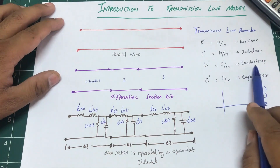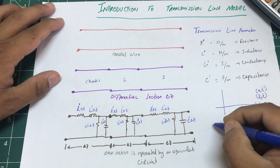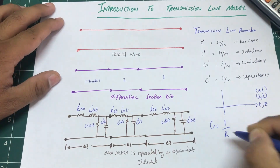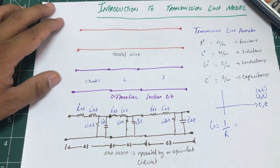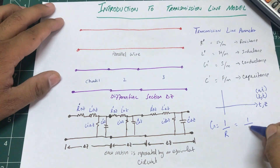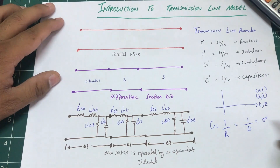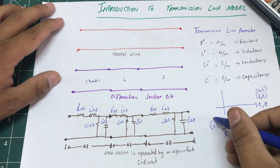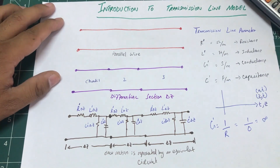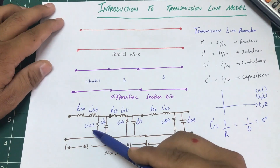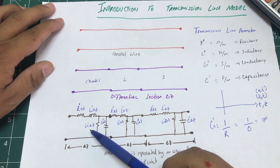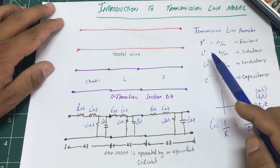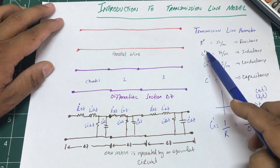G is conductance, and conductance is 1 over R. If I have no resistance, then G equals 1 over 0, which gives infinity — meaning electrons can roam around freely in the piece of wire. So my concluding remarks regarding the transmission line model: these components are not physically present in the wire, but the wire behaves like them. You can call them parasitic capacitances and parasitic inductances.